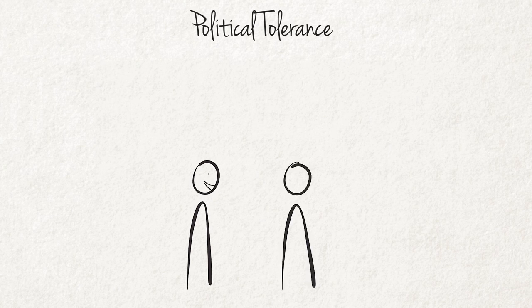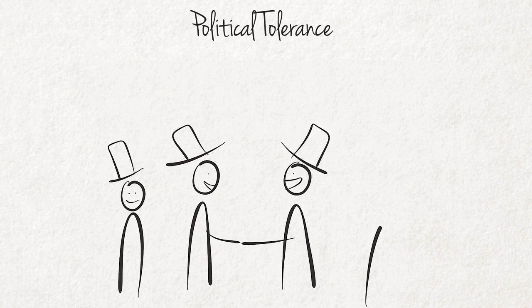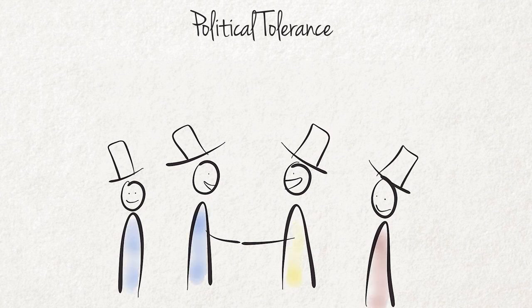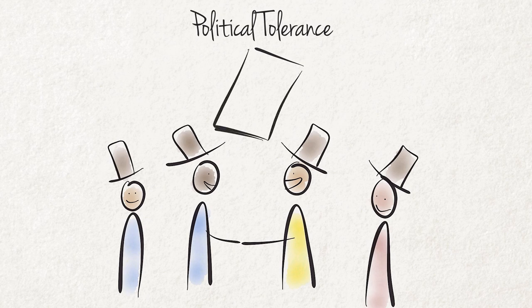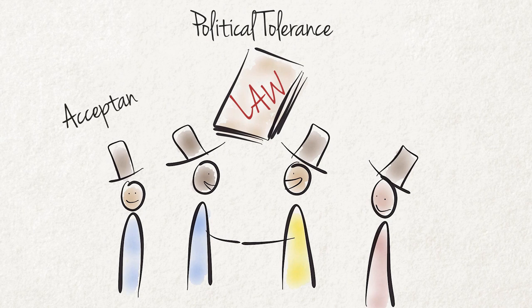Multi-party systems require political tolerance in word and actions by all individuals, including political representatives. Political tolerance means accepting and respecting the views of individuals and groups whose viewpoints differ from one's own. People should be able to express their opinions and views freely, as long as they do not interfere with someone else's rights. Democracy entails both the right to differ as well as the acceptance of these differences by others. Democracy implies respect for different views and the use of dialogue as a means to resolve conflict.